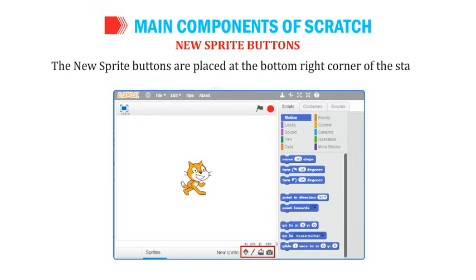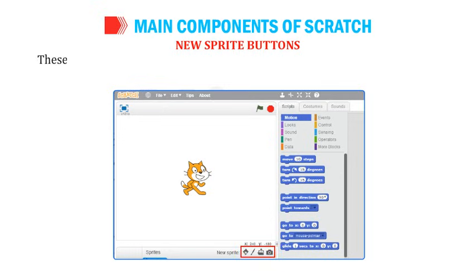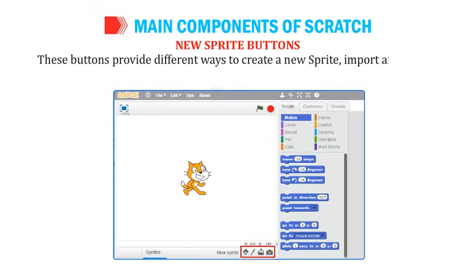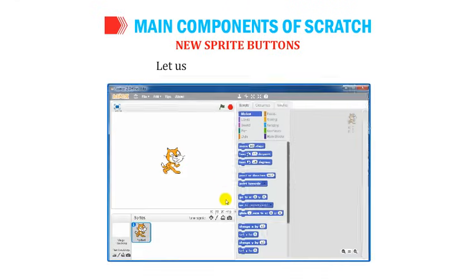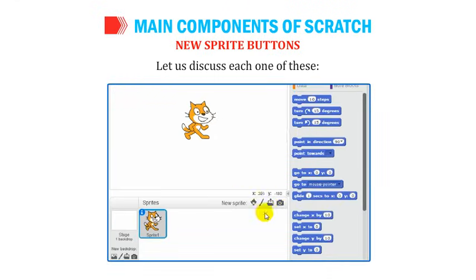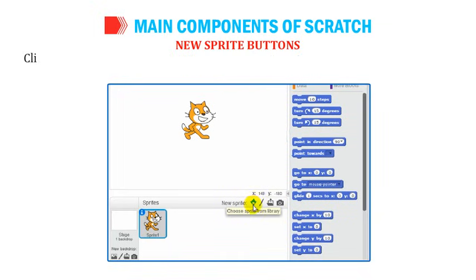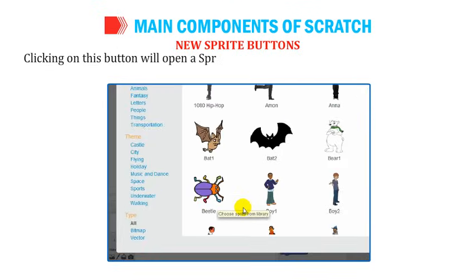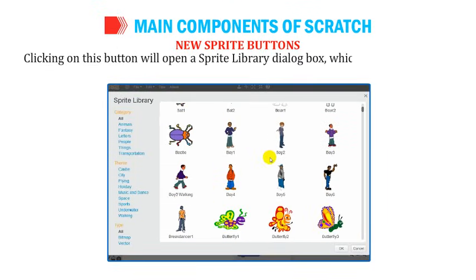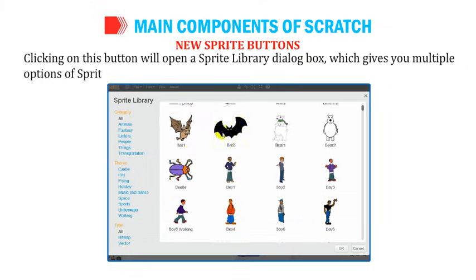New Sprite Buttons are placed at the bottom right corner of the stage and provide different ways to create a new sprite or import available sprites. Number 1: Choose Sprite from Library — Scratch contains many exciting in-built sprite options; clicking this button opens a sprite library dialog box with multiple sprite options.